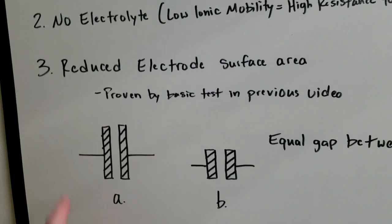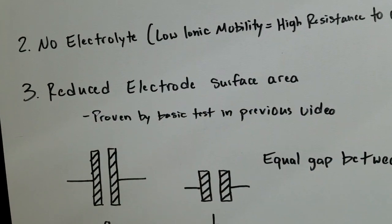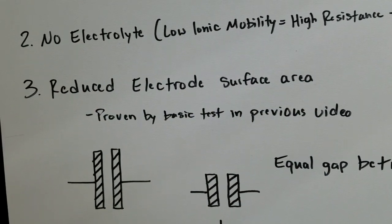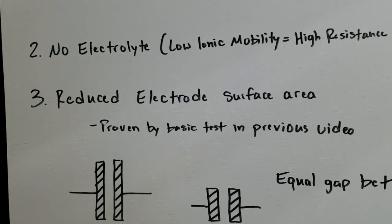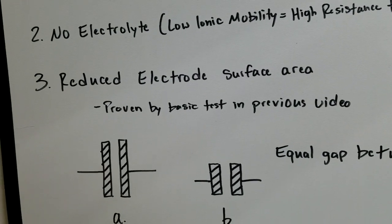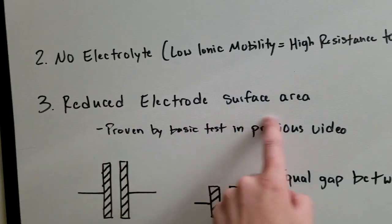Number three, he reduced the electrode surface area. And every design he did, his tubes started out pretty big, and then eventually he went down to the injectors. This is part of the reason why.